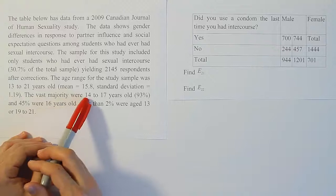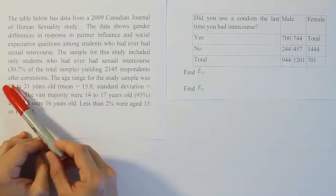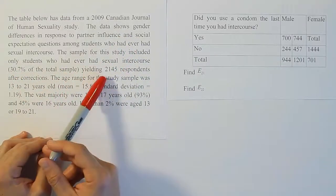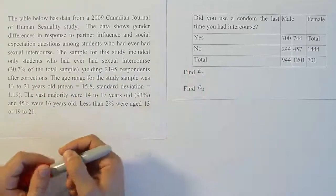Less than 2% were aged 13 or 19 to 21. So clearly the overwhelming amount is somewhere between 14 and 17 years old. And of course, this is only the 31% or so of the population of the people in the study that had sexual intercourse in that age bracket.